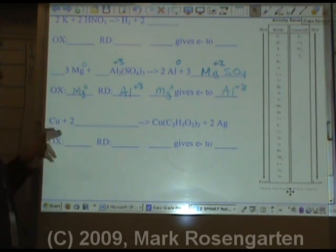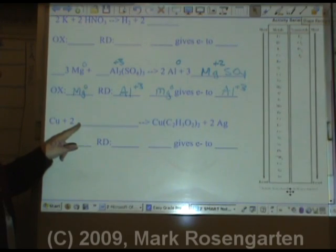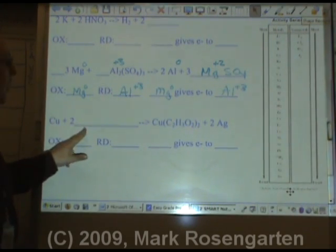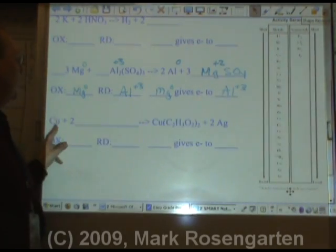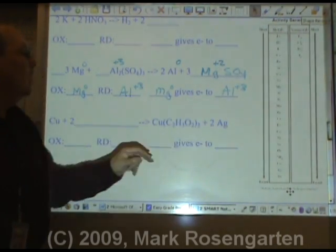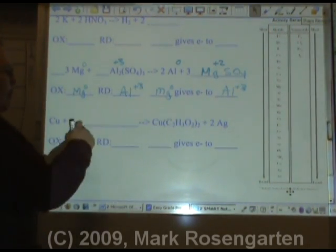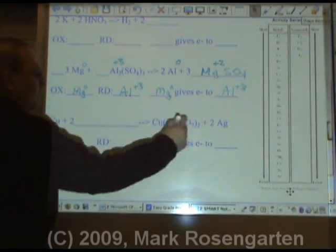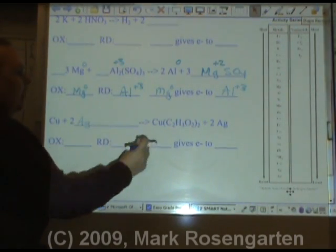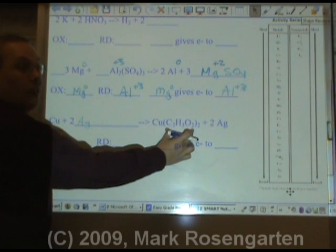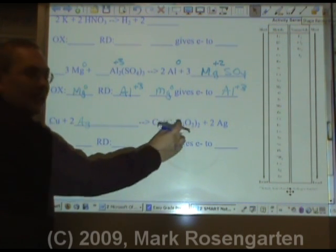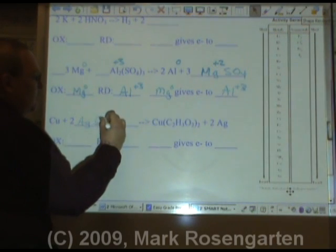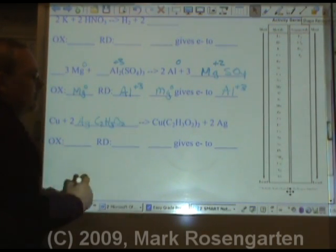For the last example, we've got copper trying to replace something. Now, this is a little bit trickier. We have to look over on this side to see what the deal is. We have silver. So copper must have replaced silver. So in our original compound, copper, we had silver, Ag, and we had whatever this thing is. This is called the acetate ion. Don't let it intimidate you. It's just a polyatomic ion. C2H3O2, just a package.